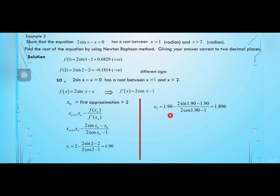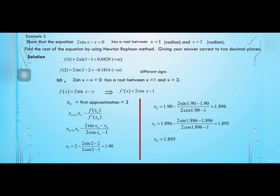Continuing, x₄ also equals 1.895. We compare with the previous value and since x₃ and x₄ agree to two decimal places, we can conclude the answer. The required solution is 1.90 correct to two decimal places.